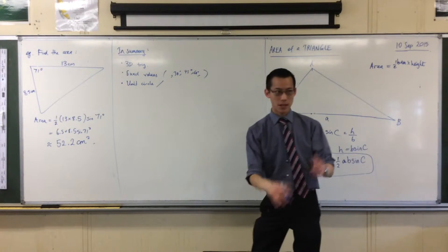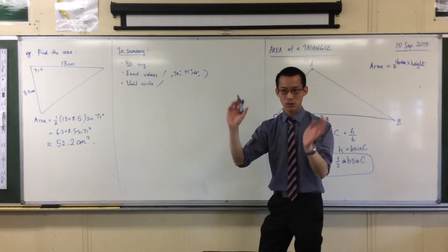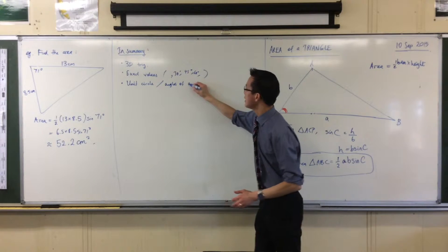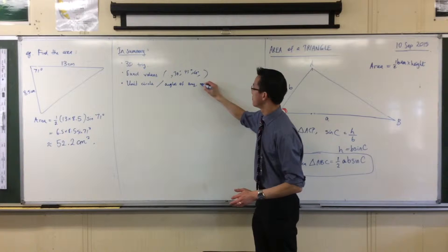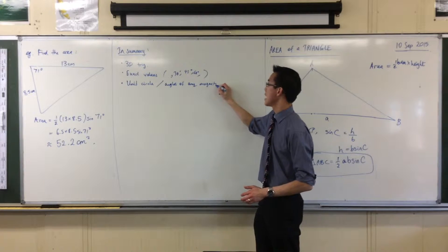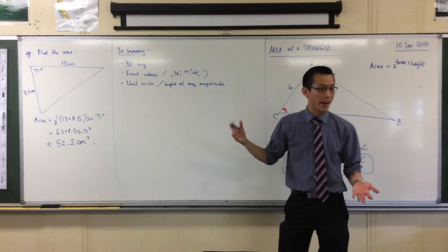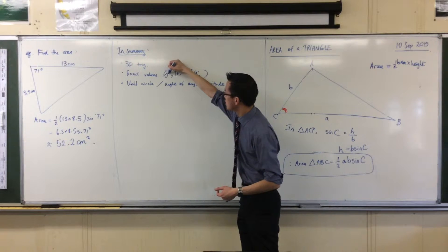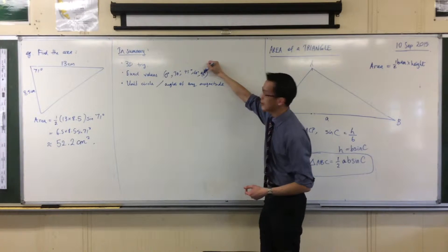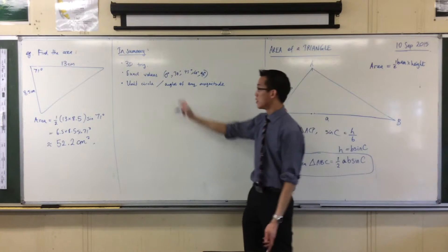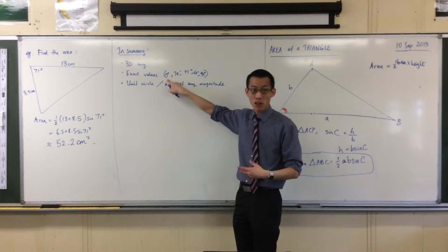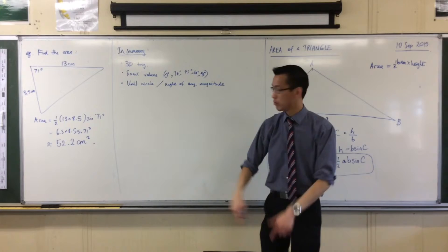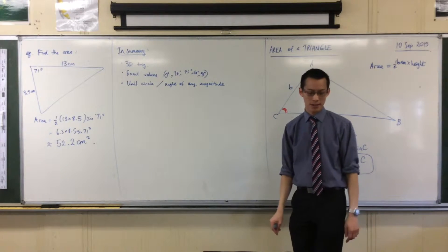Another name for this, which you might sometimes see in different textbooks or revision chapters, is angles of any magnitude — which is just another way of saying more than 90 degrees. Once we did that, we added in 0 degrees and 90 degrees. So for example, sine 0 is 0, cos 0 is 1, and we got all of that off the unit circle. You can do the same thing for 90 degrees.